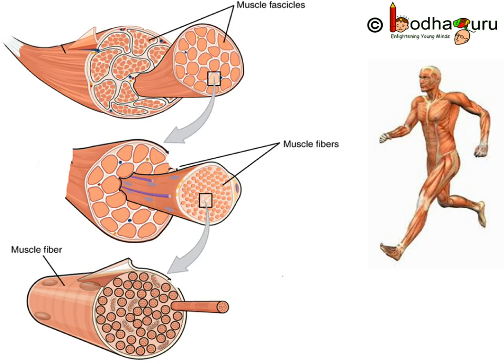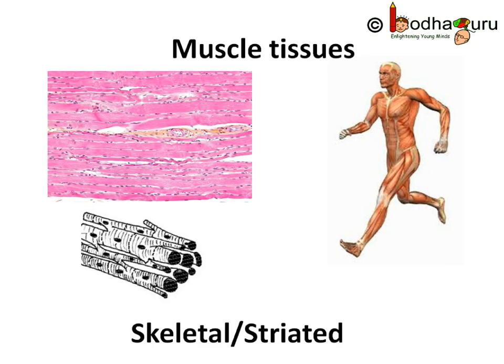Under the microscope, these muscle tissues show alternate bands of light and dark striations when stained appropriately. Hence, these are also called striated muscles. These tissues are made of cells that are cylindrical, unbranched and multi-nucleate. So remember, the muscles present in our limbs are skeletal muscles or striated muscles.